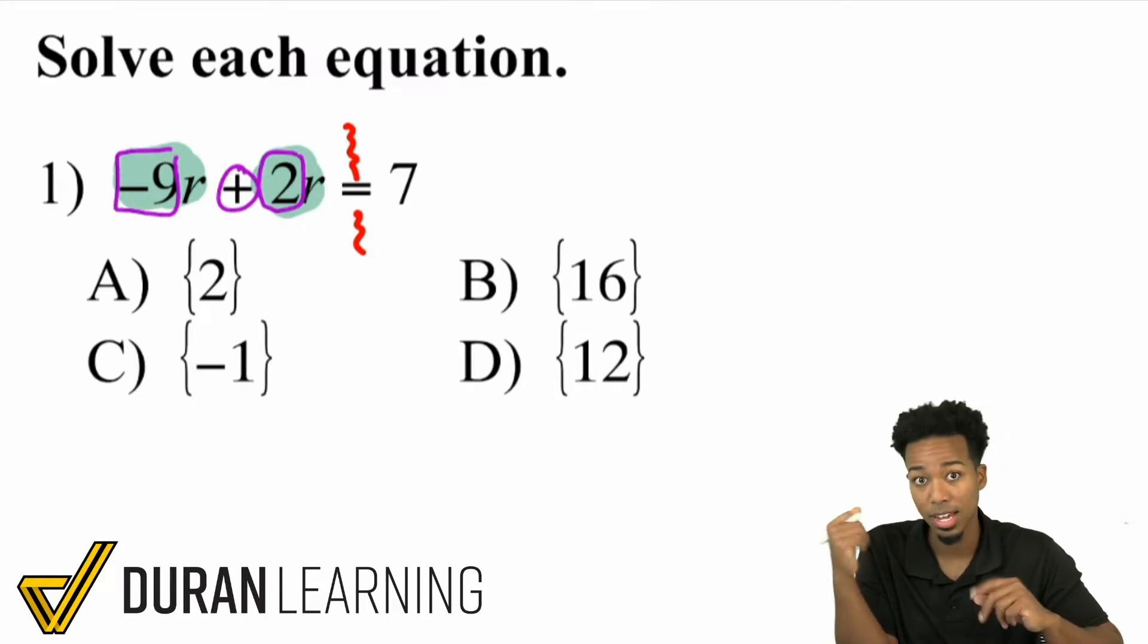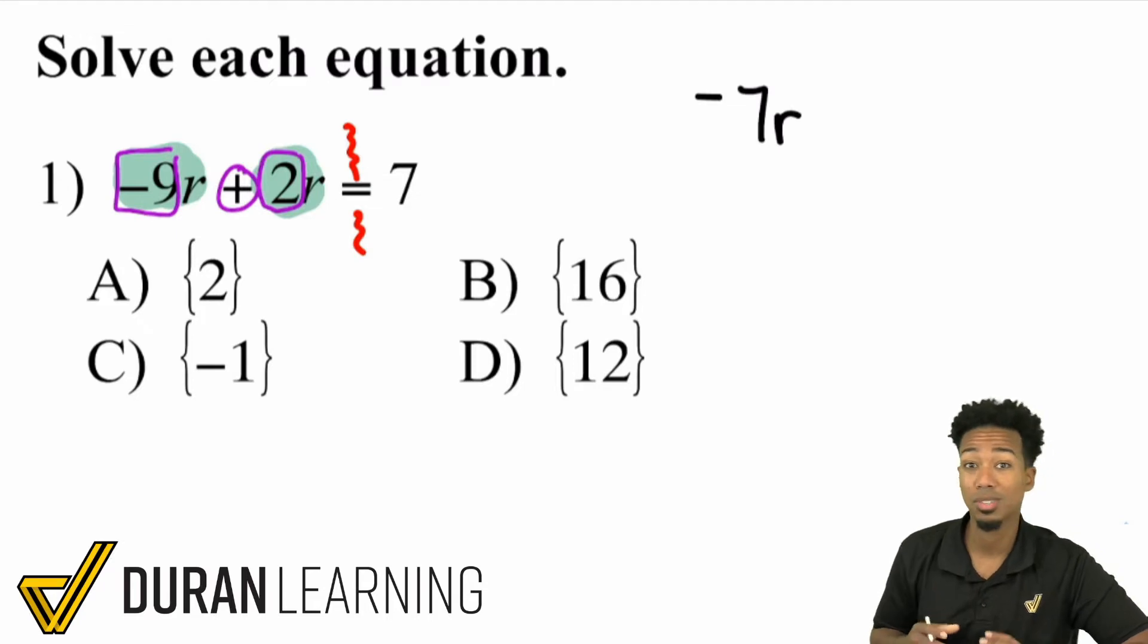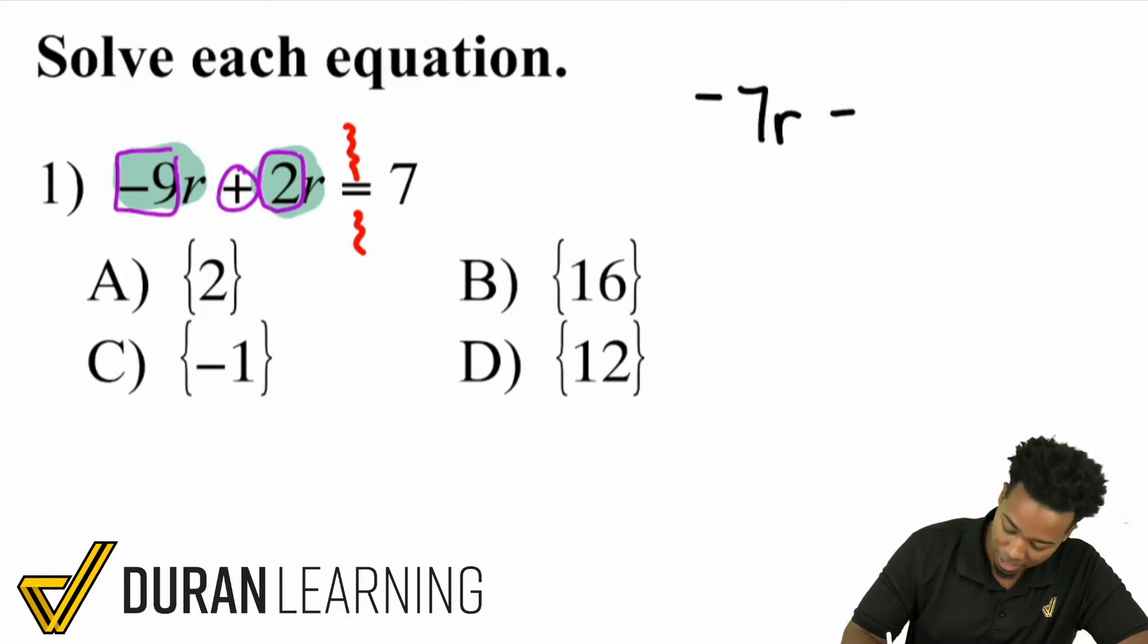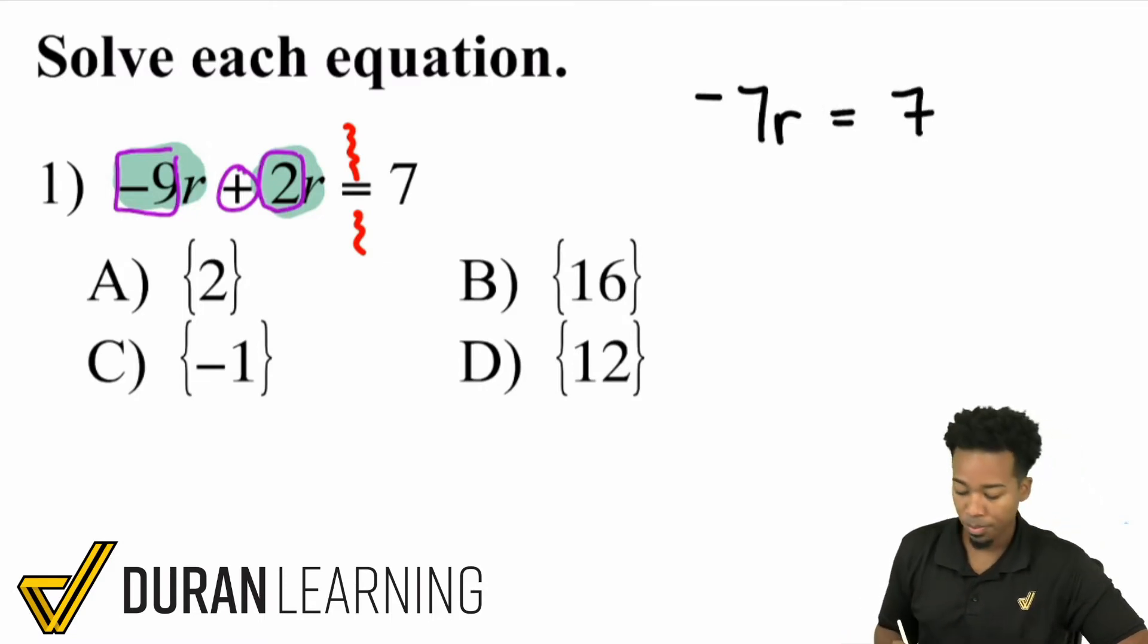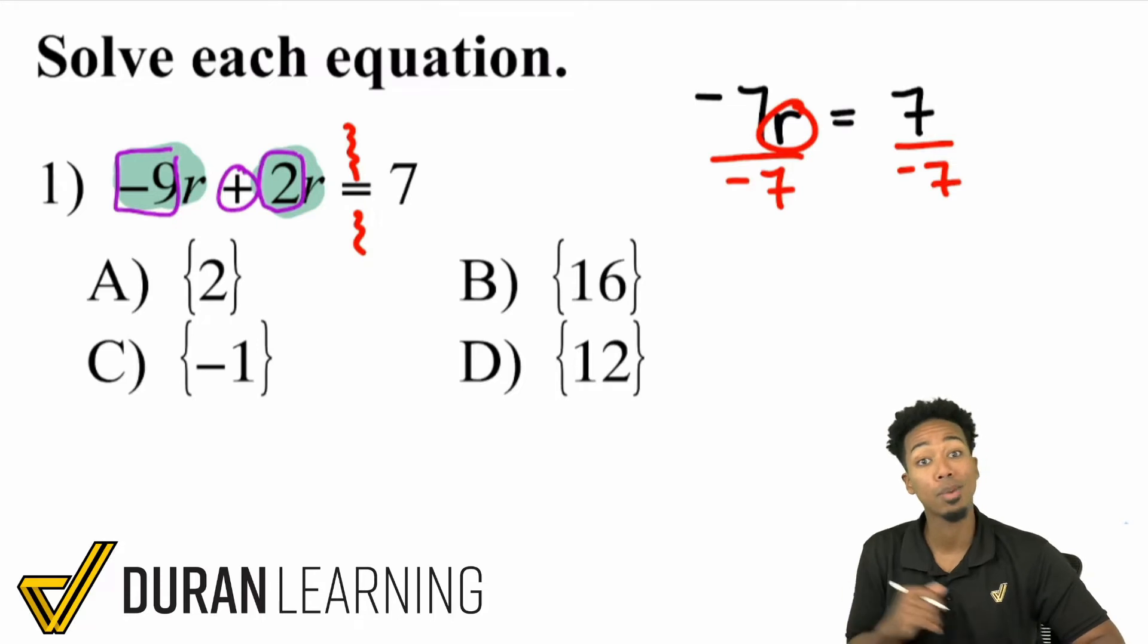So you'll make it negative 7. And again, if you forgot how to handle negative values or negative operations, then we need to make sure we go back to that part of the course here. That way you can make sure you're solid on that. But that becomes negative 7r equals 7. And now we can solve this like a regular equation. We can simply divide both sides by the same number. And that's going to be what? Dividing by negative 7. Because again, the goal is always still to get the r by itself.